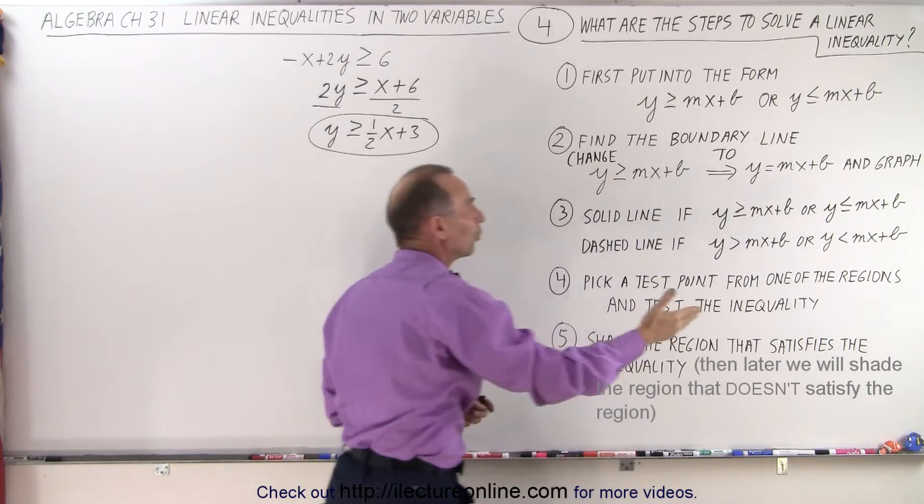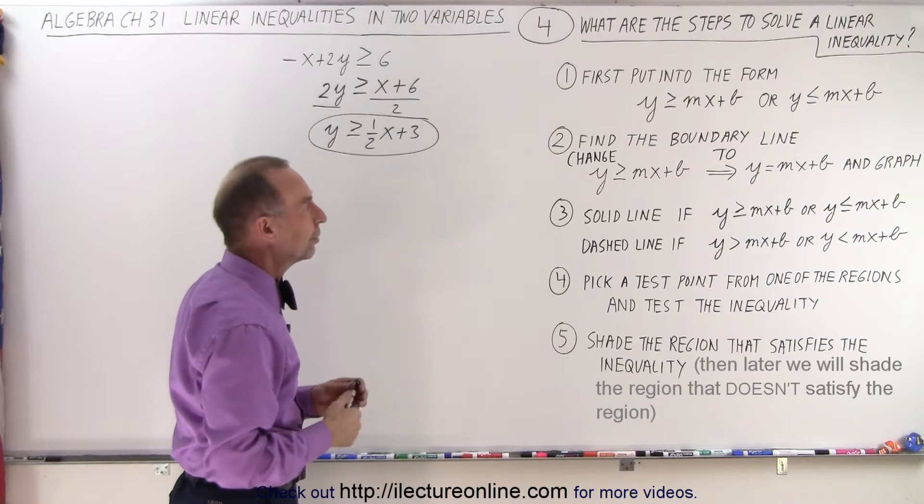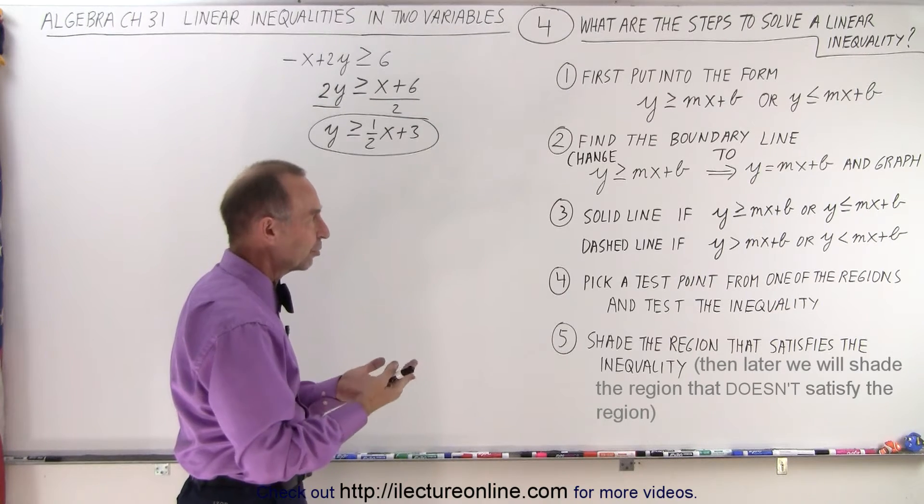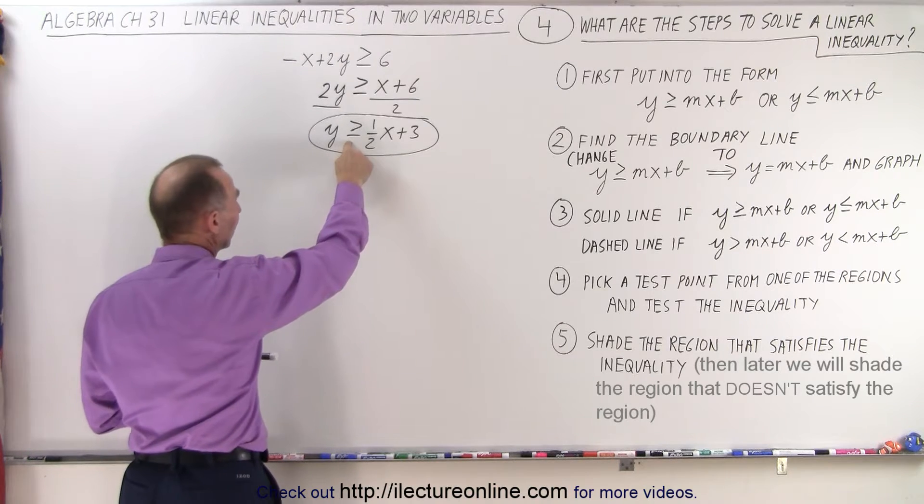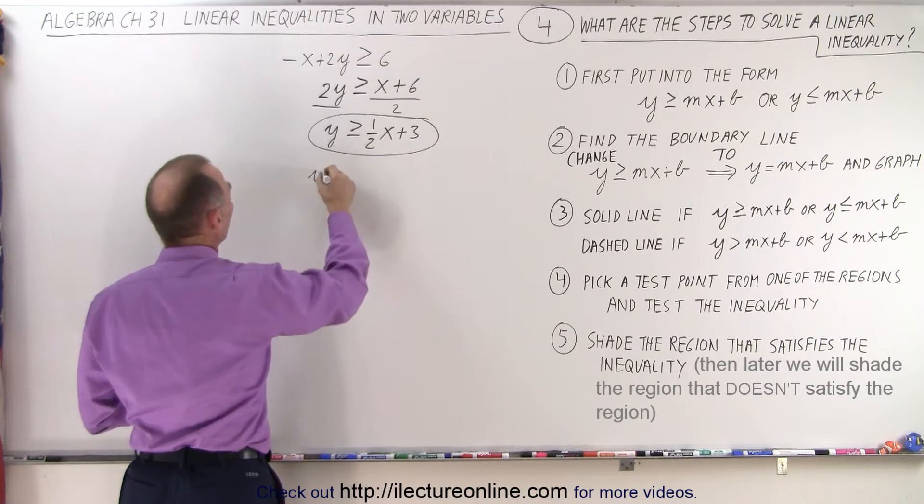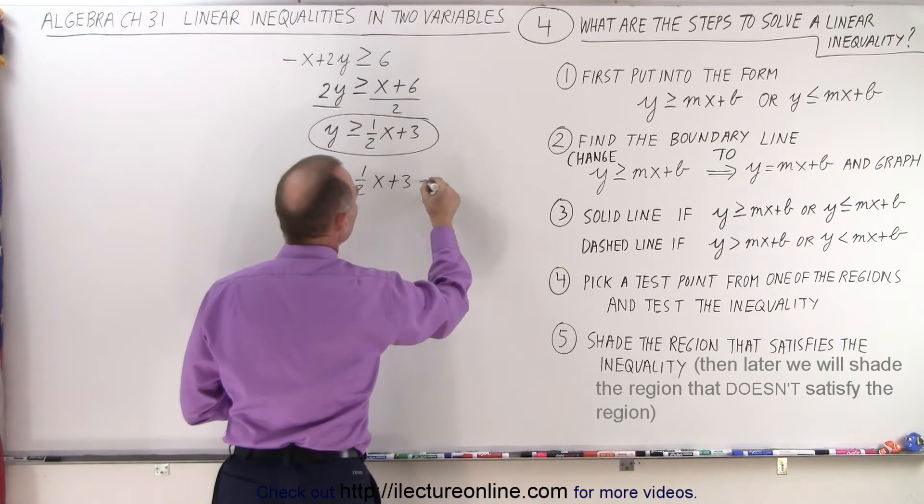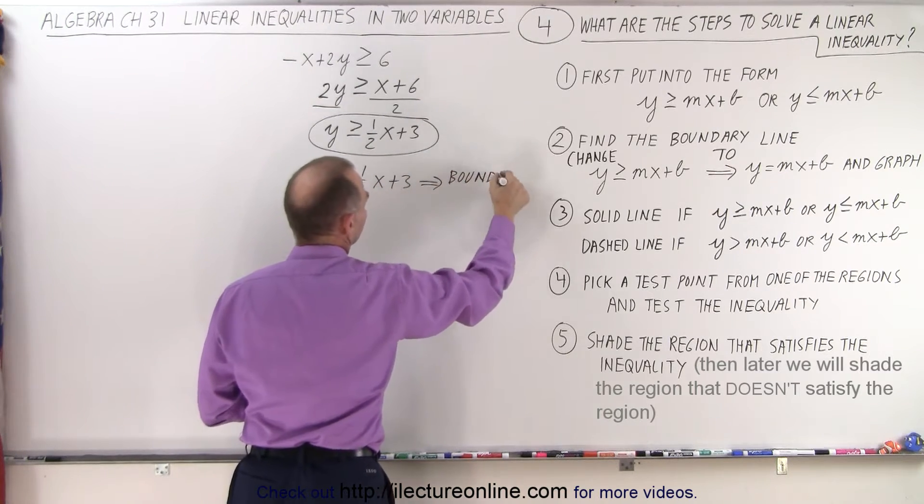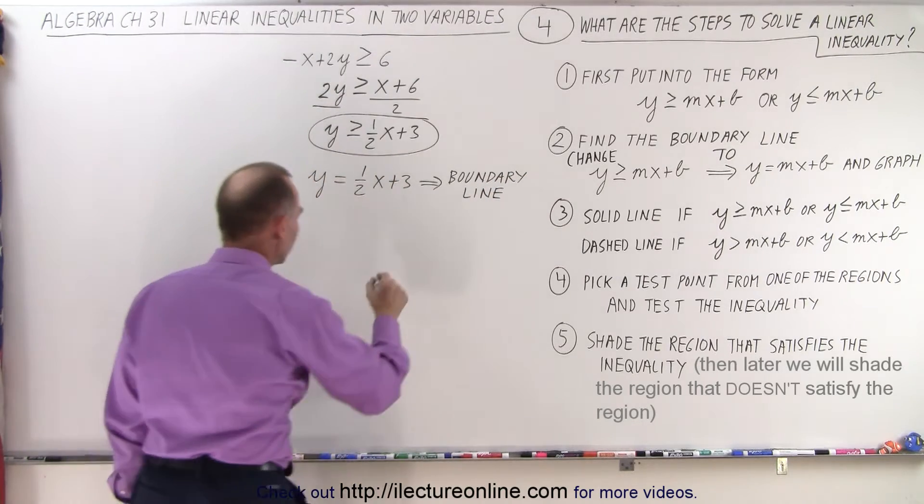Into an expression equation of a line. So we're going to change this into an equal sign, so we end up with y is equal to 1 half x plus 3, which gives us the boundary line. And then we're told to graph that line, so let's go ahead and do that.